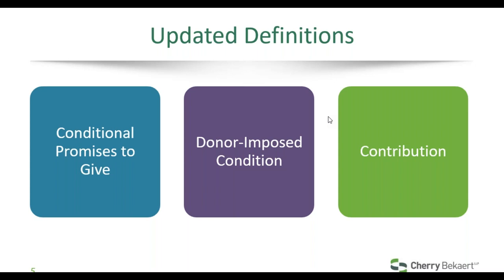If you do not overcome the barrier, that gives the contributor a right of return or a right of release — the same concepts continue, but now we're looking for a barrier rather than an event. The term contribution keeps the same overall definition, but in the guidance it continues: in a contribution transaction, the value returned to the resource provider is incidental to the potential public benefit. In an exchange transaction, the public benefits are secondary to the potential proprietary benefits to the resource provider. These terms — 'incidental' and 'secondary' — have confused people because they sound similar, causing uncertainty about what constitutes the potential public benefit.